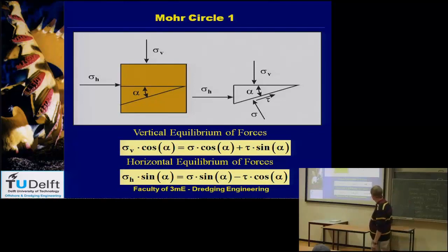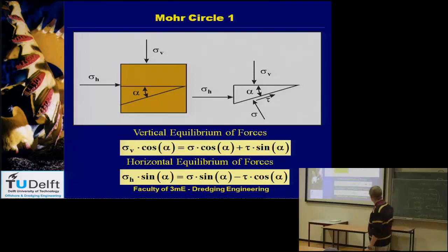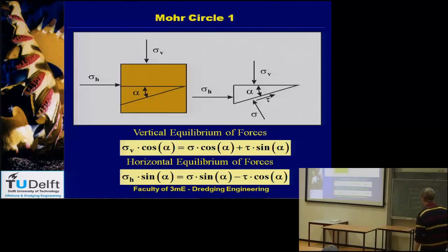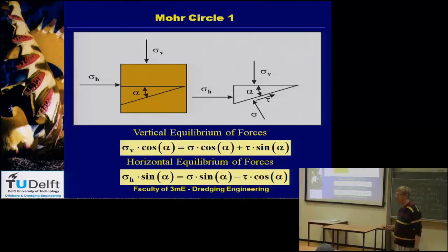For the horizontal equilibrium, sigma_h times sine alpha is the horizontal external force (the surface has the value of sine alpha). Then sigma times sine alpha acts against it, and tau times cosine alpha acts in the same direction as sigma_h, so it gets a minus sign: tau cosine alpha. This gives two equilibrium equations with two unknowns — sigma and tau — so you can solve it. That's first-year mathematics.